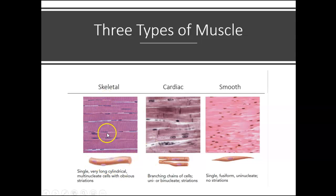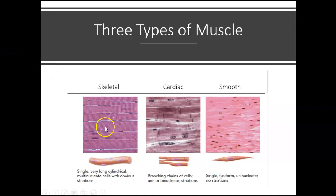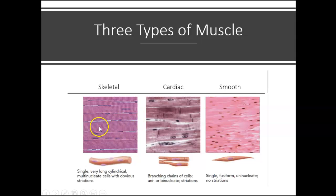Each of these skeletal muscle fibers is going to be multinucleated. It's going to have the organelles you find in most other cells. However, it also has some specialized organelles that we're going to talk about. Something else you'll notice about skeletal muscle fibers is that they are striated — there are bands of dark lines and lighter lines on skeletal muscle fibers. We will talk about what these striations are and what they're made of.